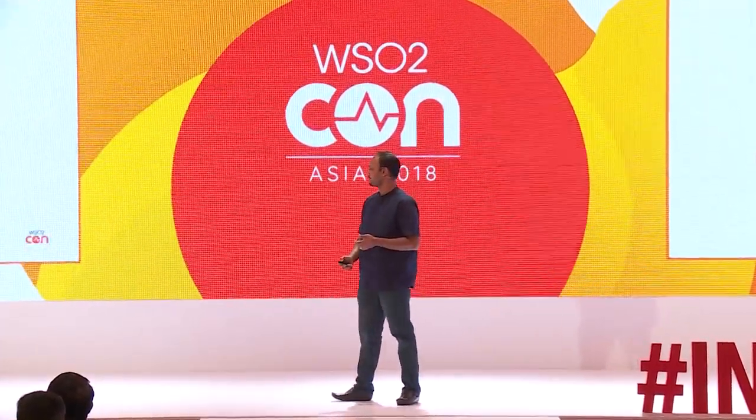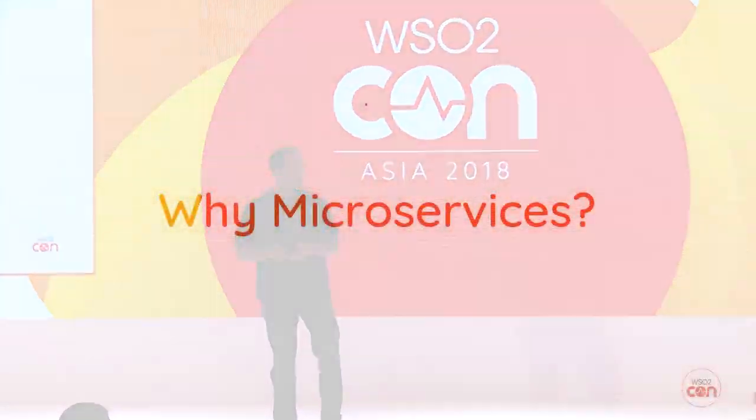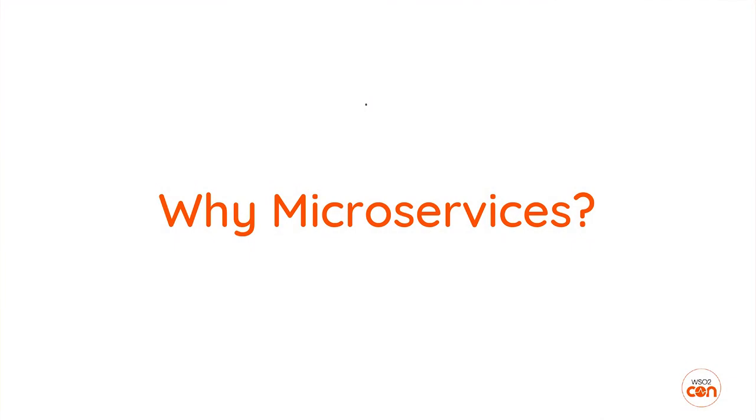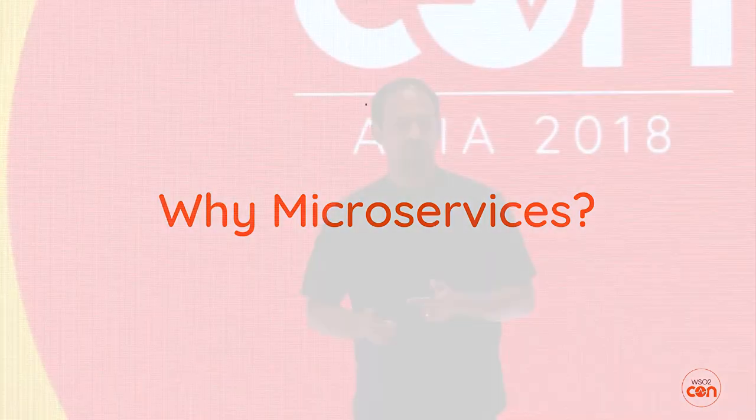Today I'll be talking about APIs and their importance in a microservice architecture, which is a very interesting topic in today's world. To begin, I'd like to start by talking about why we need microservices in the first place. To explain that, I'll be using an example of a monolith application to see what problems exist there.